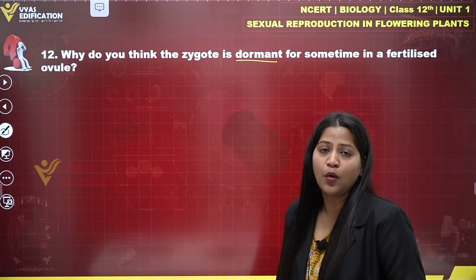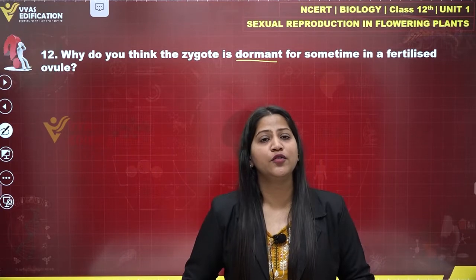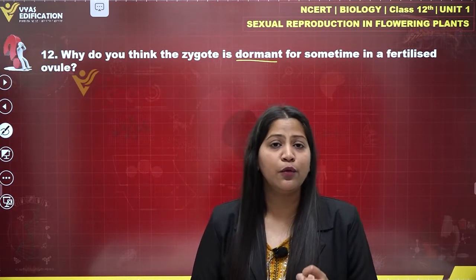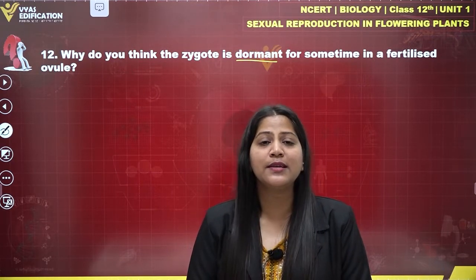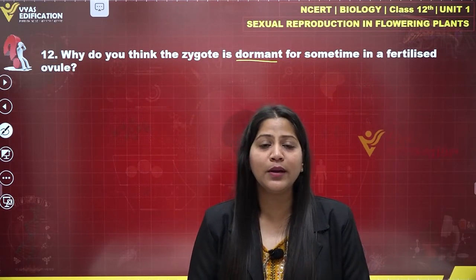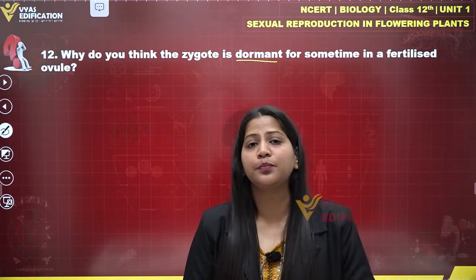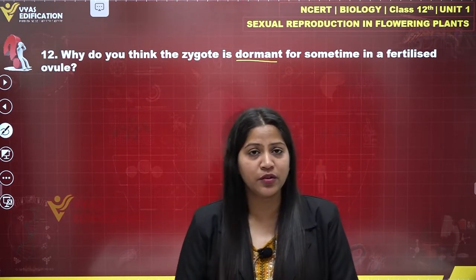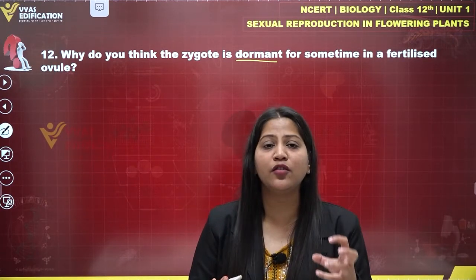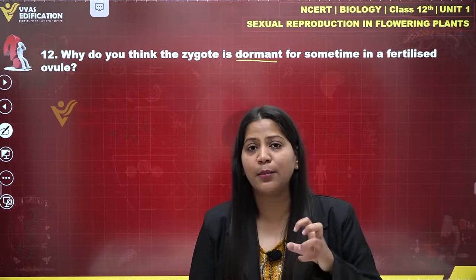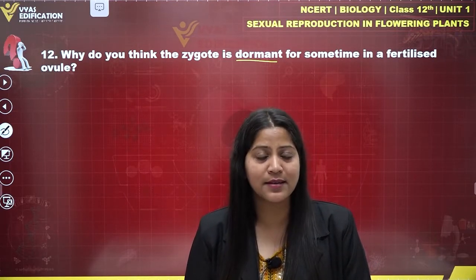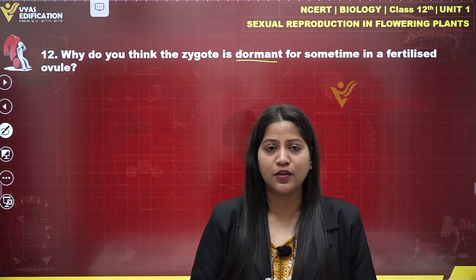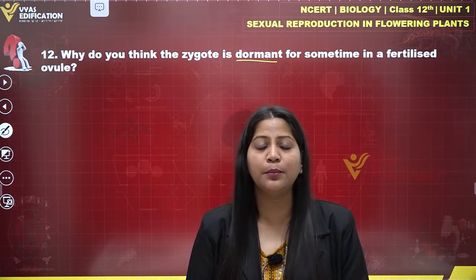Double fertilization is a unique feature of all angiospermic plants. Double fertilization involves syngamy as well as triple fusion. Syngamy is a fusion of male and female gamete, and triple fusion is a fusion of three haploid nuclei — two polar nuclei and one nucleus of a male gamete. This double fertilization leads to the formation of a zygote and primary endosperm nucleus simultaneously.